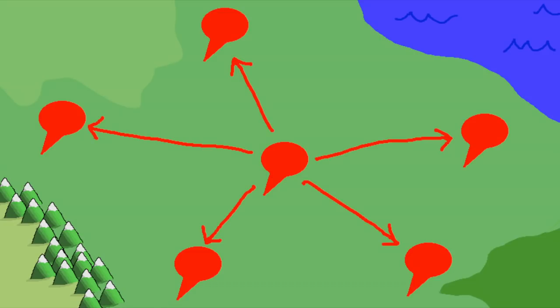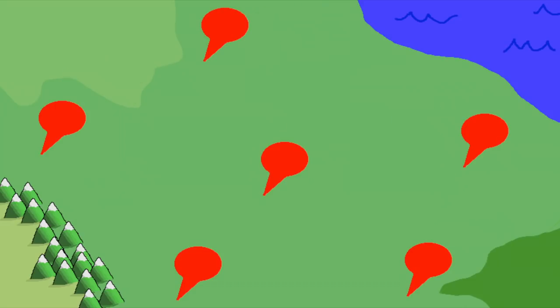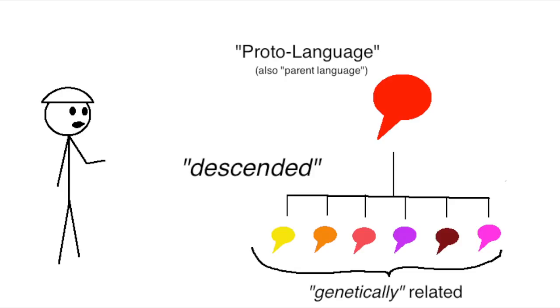With languages, what happens is the language will expand, either by the people who speak it expanding or by outsiders learning the language, and then in different places they'll talk more and more differently from each other until, over time, they can't understand each other anymore. It's not a perfect analogy, but when this happens we say that the resulting languages are descended from the original language, called a proto-language, and that they're genetically related to each other.